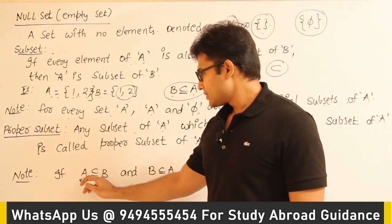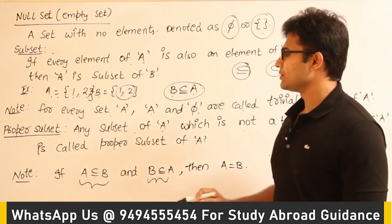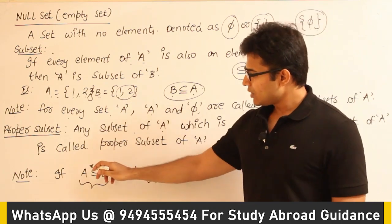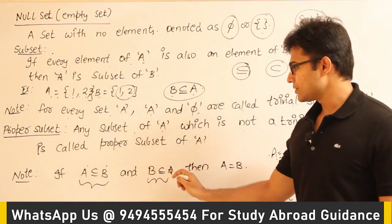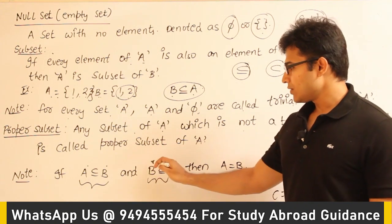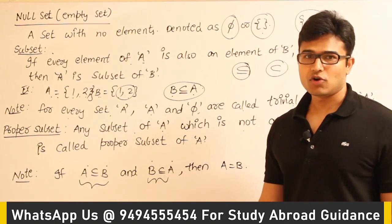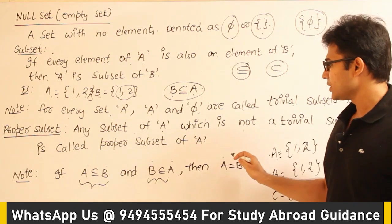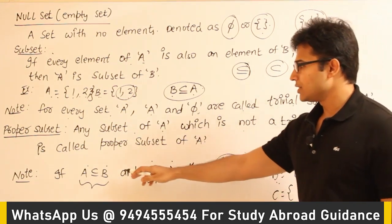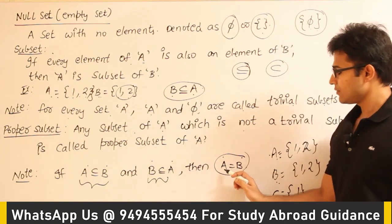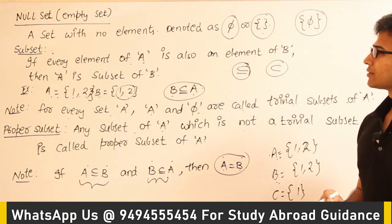If A is a subset of B and B is a subset of A, it means every element of A is in B and every element of B is in A. Therefore we can say that A equals B. So if A ⊆ B and B ⊆ A, then A = B.